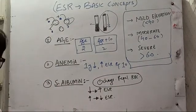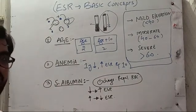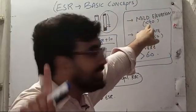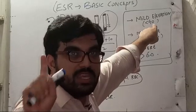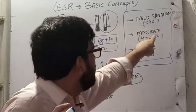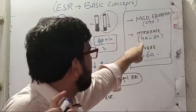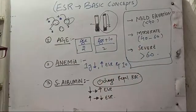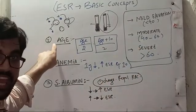That is false elevation in the ESR due to anemia. In mild elevation, less than 40 is mild elevation, but that is corrected ESR. Corrected ESR means exclude these things and apply these two formulas. Moderate elevation means 40 to 60 and severe means more than 60.